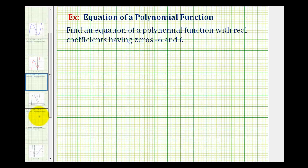So for our example, notice how one of the zeros is positive i which we can write as zero plus i which means the conjugate of this would be zero minus i or just negative i. So the zeros of our function are negative six, positive i, and negative i.